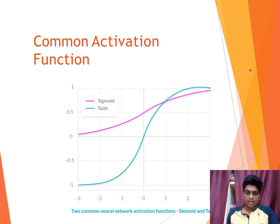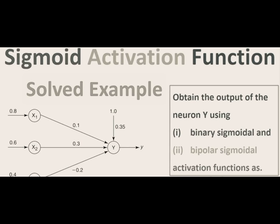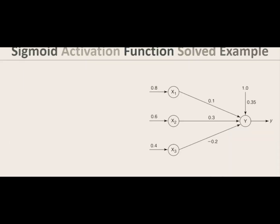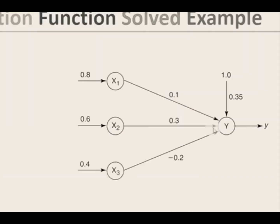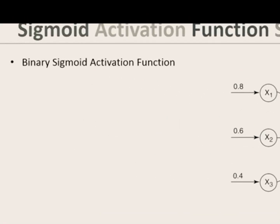Now we can see one example with the sigmoid activation function with a binary sigmoid and bipolar sigmoid. Here we are going to solve that sigmoid activation function by using binary sigmoid and bipolar sigmoid activation functions. We are provided with three inputs x1, x2, x3 and output y: 0.6, 0.4 are the inputs and for bias the weight is given by 0.35, the weights are given by 0.1, 0.3 and minus 0.2.